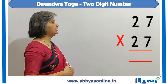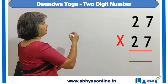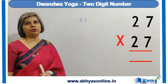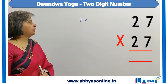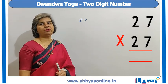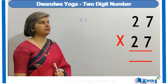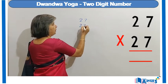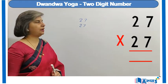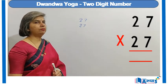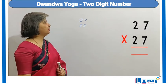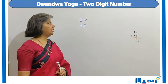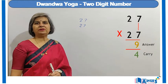Let us take the example of finding the square of 27. This square can be found in three steps. I will write 27 and multiply it with 27.